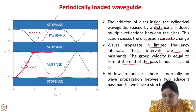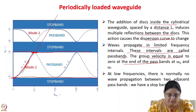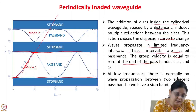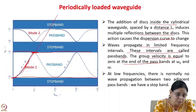At low frequencies, there is normally no wave propagation between two adjacent pass bands — there is a stop band. So the two modes, for example TM01 and the next TM mode, are now separated by a stop band.